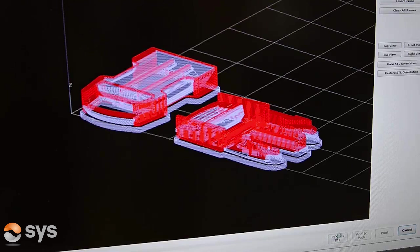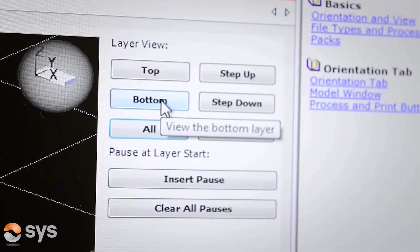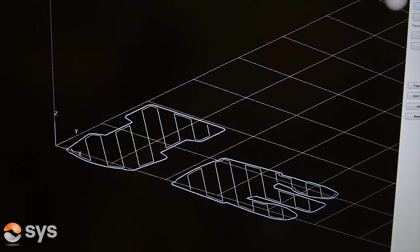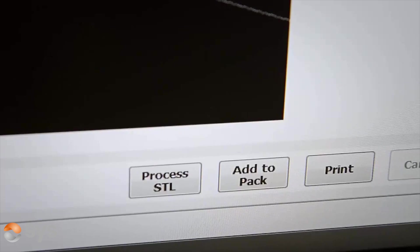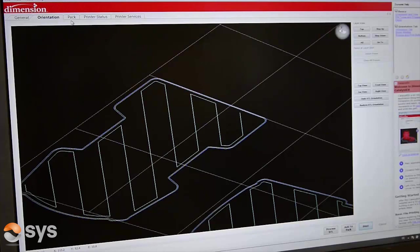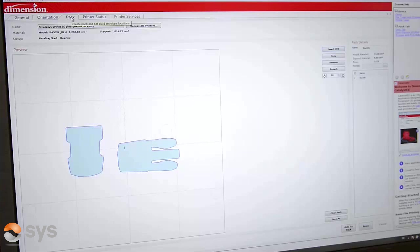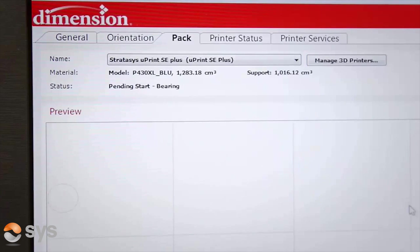When we process the file, this allows you to simulate the model showing the layers of the model and the support material and allowing capturing of issues prior to sending to print. We can now start the print directly or add to pack, which is the feature allowing multiple print jobs to be combined within the limits of the build chamber.